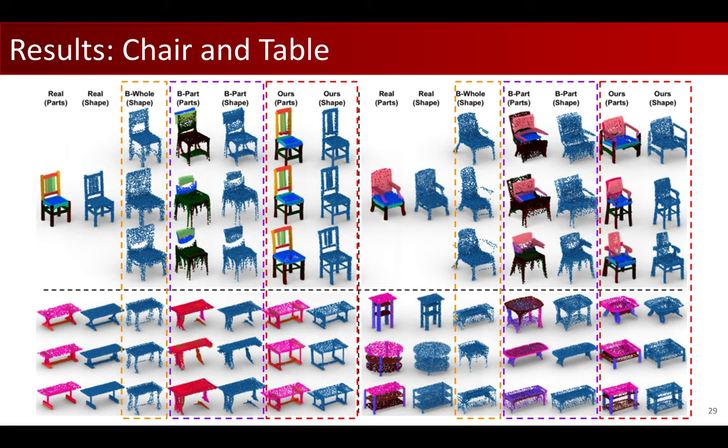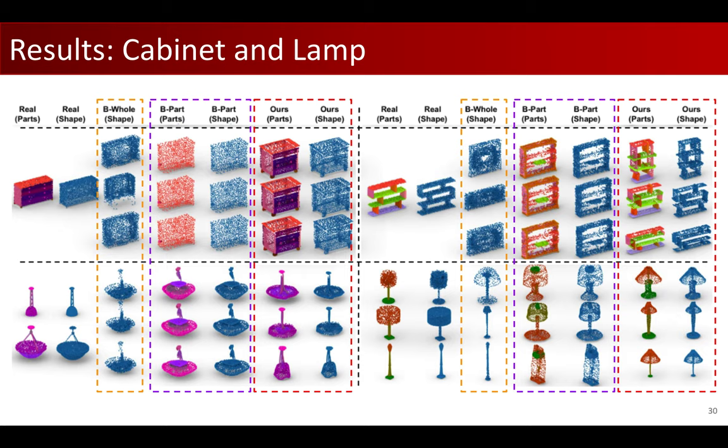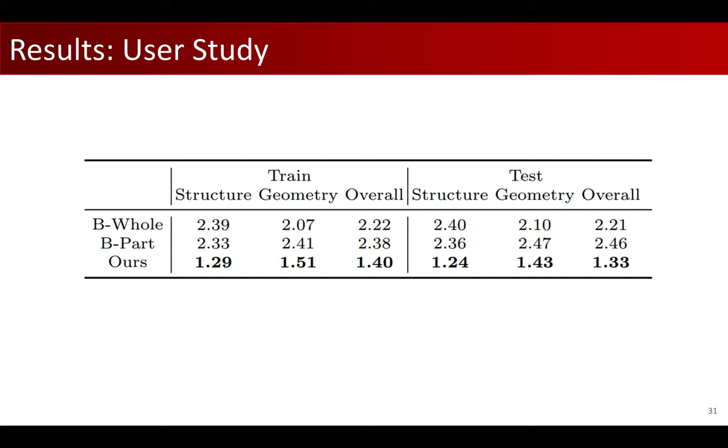Obviously, our method generates shapes with clearer part structures and boundaries. In the real data column where I only show one example, this means that there is only one real data in the PartNet dataset. We observed that even for these cases, our method achieved a reasonable amount of generation diversity, thanks to the knowledge sharing among similar part trees and subtree structures when training a unified conditional network.